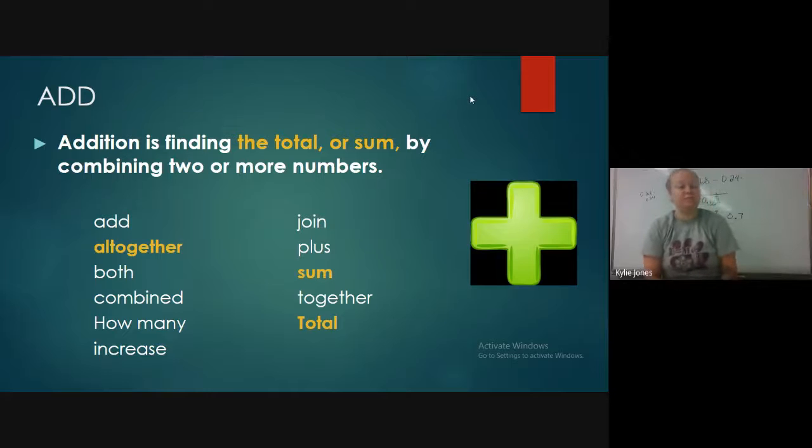Some other words that you might see in a word problem are going to be add, all together, both, combined, how many, increase, join, plus, sum, together, and total. And the words that are yellow are the ones that you kind of see the most often. So find the total of this much money and this much money, or all together, how much money did this person spend. So those types of word problems are going to use, or addition word problems are most likely going to use those words, all together, sum and total. But you might see some of these other ones as well.